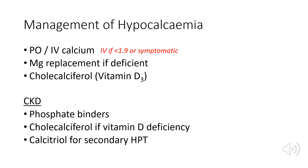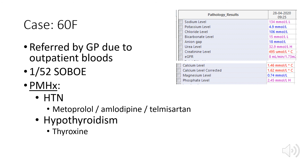Treatment of hypocalcemia is straightforward: replace calcium, given IV if severe or symptomatic with tetany. Also replace magnesium if deficient and vitamin D if deficient. In CKD with secondary hyperparathyroidism, the two driving problems are calcitriol deficiency and hyperphosphatemia, so treatment involves phosphate binders to reduce phosphate levels and calcitriol replacement.